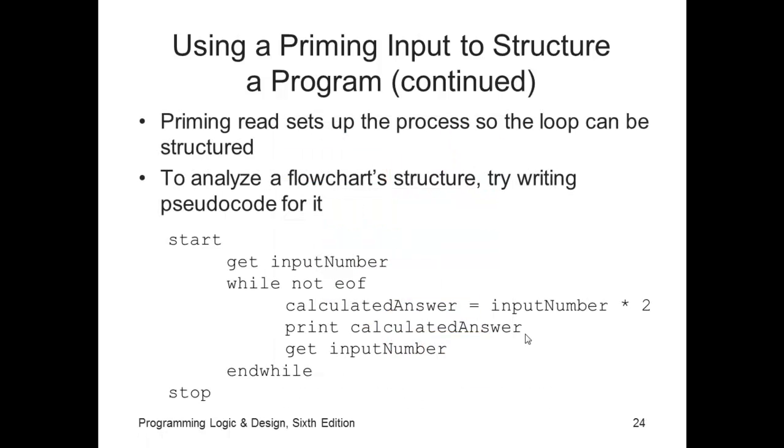Here's pseudocode for a loop. We get the original number, get the input number. And then as long as we've got a number, we calculate the answer, or assign to calculated answer, input number times two. We print the calculated answer, we get the next number. We continue to do this sequence, or the body of the loop, which is a sequence, until we have no more numbers, which is the end of file. Once we get end of file, we end the loop.